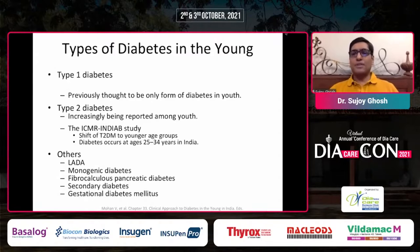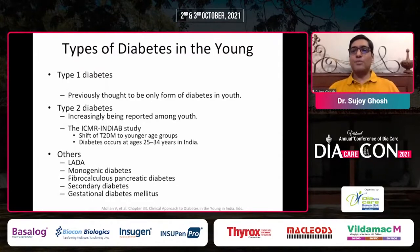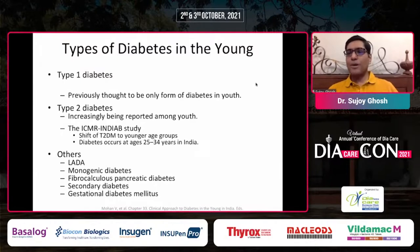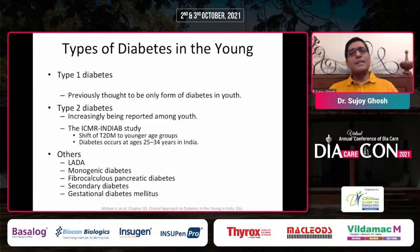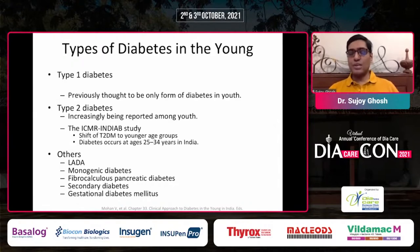If you look at types of diabetes: technically, when we were students, we were taught that young diabetes means almost universally type 1. Now we realize that apart from type 1, you have type 2, and as with monogenic diabetes, there are several other types of diabetes, which I will illustrate through cases as we go along.